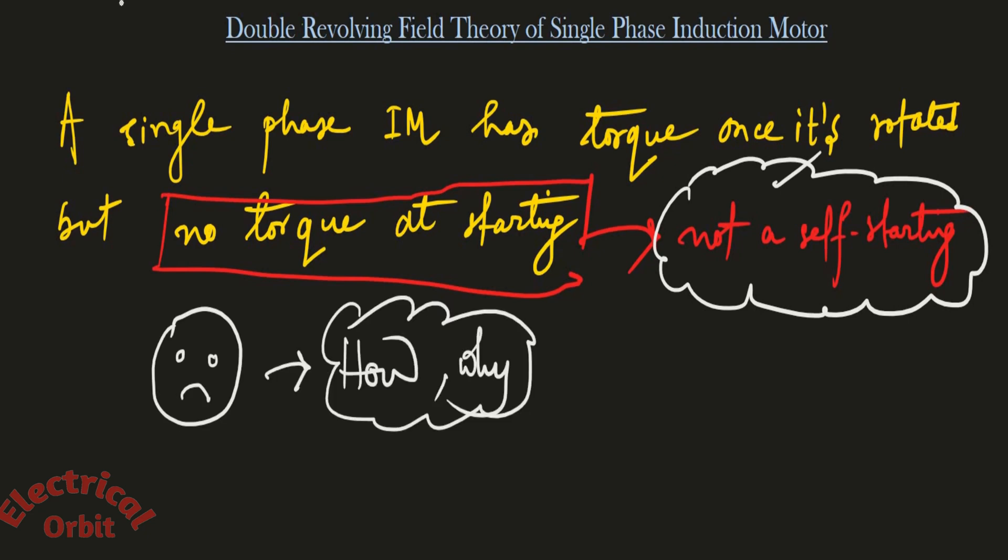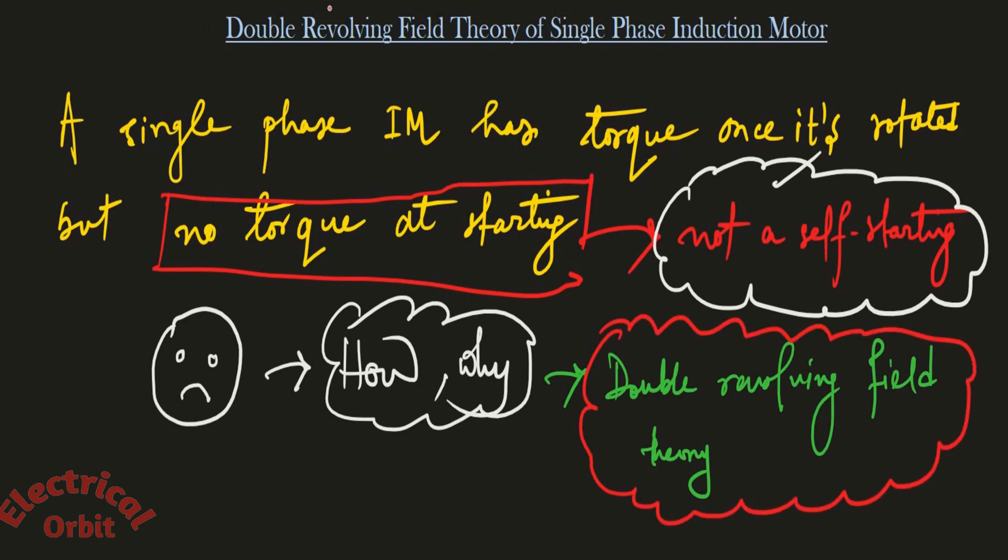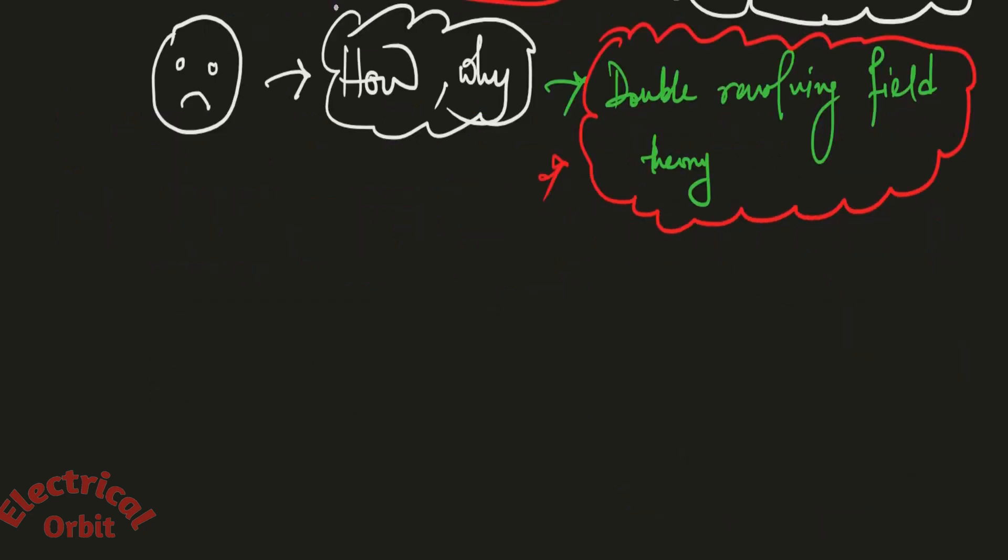Now to overcome this confusion, a theory called double revolving field theory has been proposed. According to this theory, whenever we are giving supply to the stator, then the winding at the stator creates an alternating sinusoidal magnetic field.